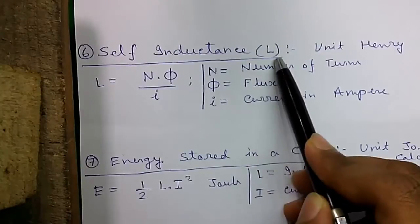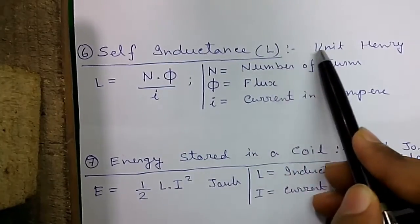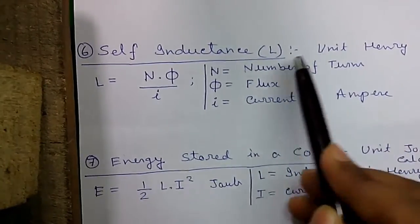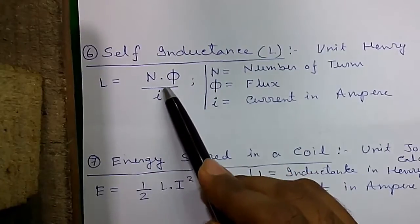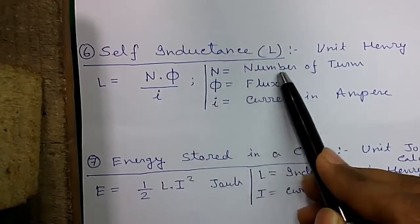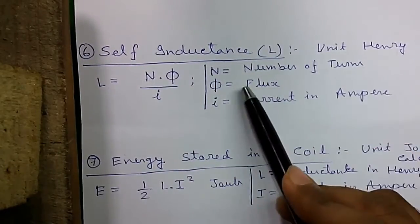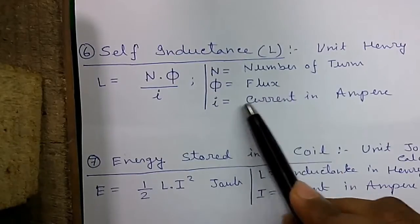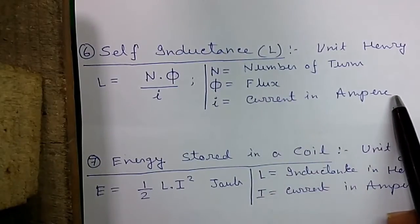Formula six, self inductance, represented as L and unit is Henry. So L equals to N phi by I, N is the number of turns in the coil, phi is the flux and I is the current in amperes.